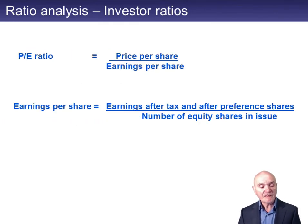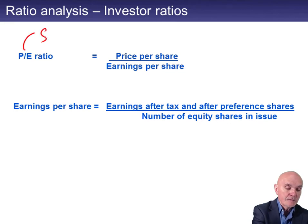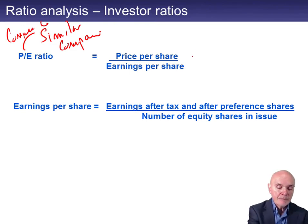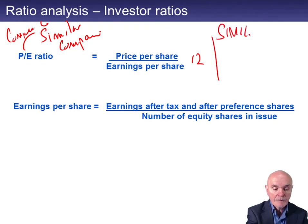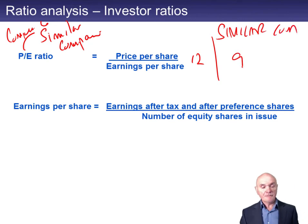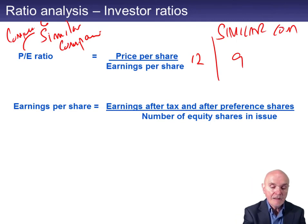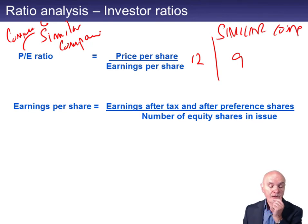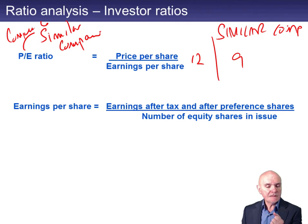Finally, two investor ratios: the PE ratio and earnings per share. The PE ratio — you have to compare this to similar quoted companies. Say our company had a PE ratio of 12, and similar quoted companies had an average PE ratio of only 9. We have a PE ratio of 12, which means people are willing to pay 12 times our earnings in the share price, but only 9 times other people's earnings. They seem to think our company is particularly attractive, yet it's in a similar business — they're all supermarkets or all house builders.